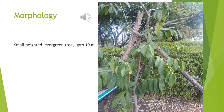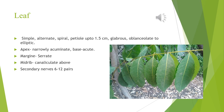Morphology: It is an evergreen small tree or shrub up to 6 to 10 meters tall. Leaves are simple, alternate, spiral, petiolate up to 1.5 cm long, glabrous, oblanceolate to narrow elliptic apex, narrowly acuminate, base acute, margin serrated and slightly recurved glabrous. Mid rib prominently visible. Secondary nerves 6 to 12 pairs.